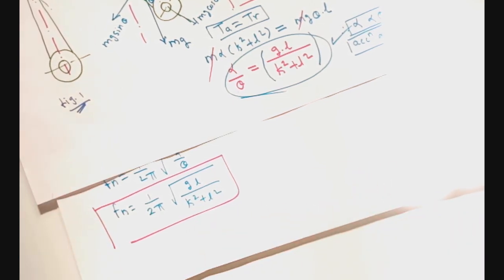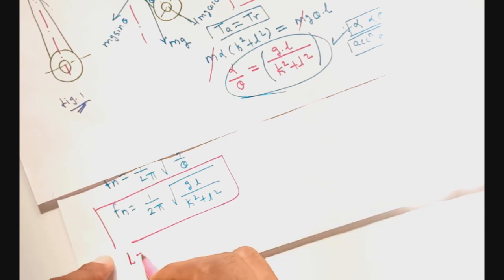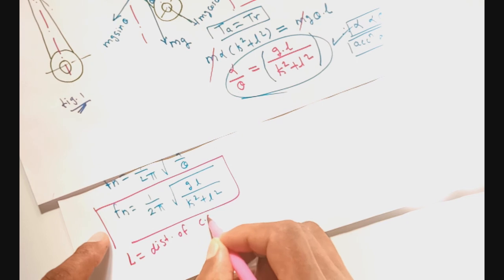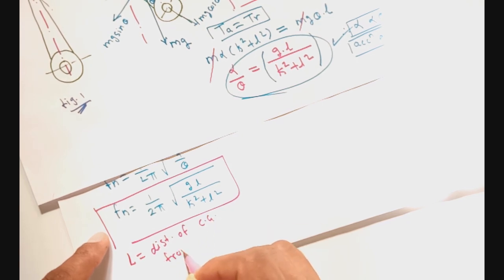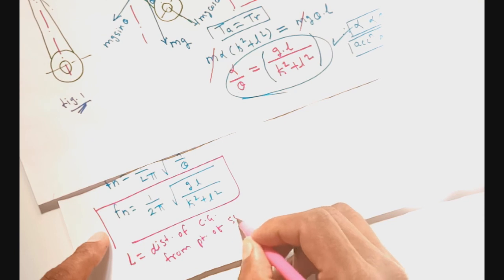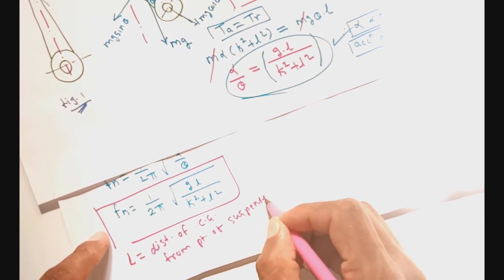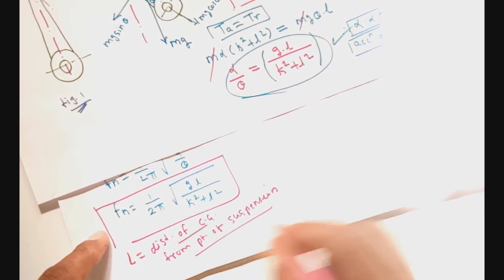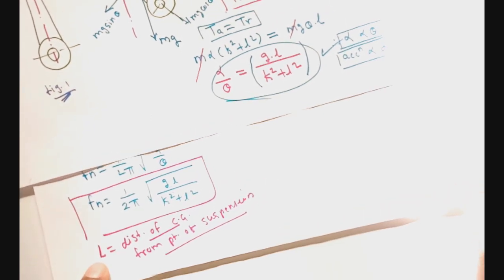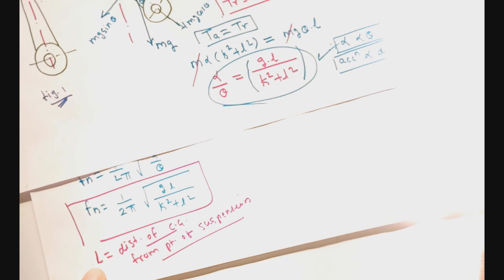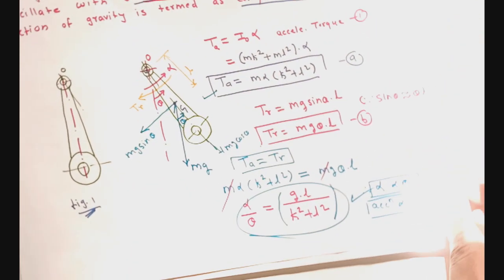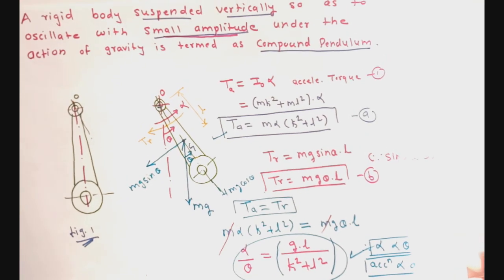In this equation, L is the distance of CG from the point of suspension of the connecting rod or compound pendulum. Remember, L is not the length of the connecting rod — it is the distance of CG from the point of suspension. Thank you.